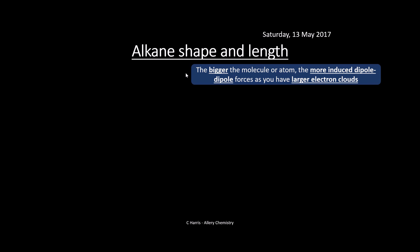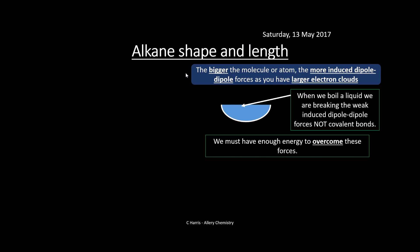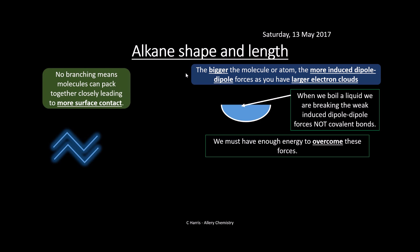The bigger the molecule, the more induced dipole-dipole forces you have, and the larger the electron clouds. When we boil a liquid we are actually breaking the weak forces between molecules, not breaking any bonds within the alkane itself — we're just overcoming the forces between them. We need enough energy to overcome these forces. Molecules without any branching — straight chain molecules — can pack really closely together, giving a good amount of surface contact. You can see the electron clouds around the atoms and bonds, and there's quite a bit of overlap, meaning a good strong interaction between these alkane chains.